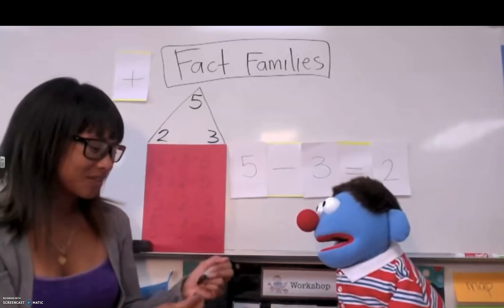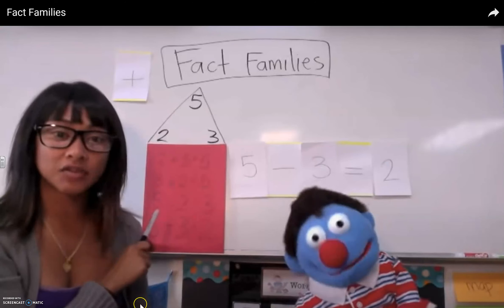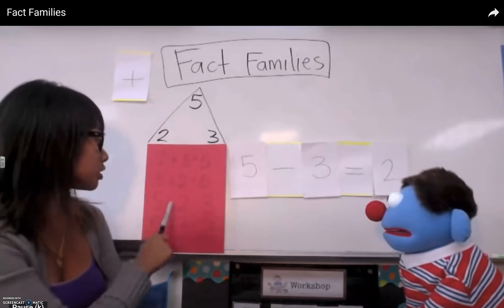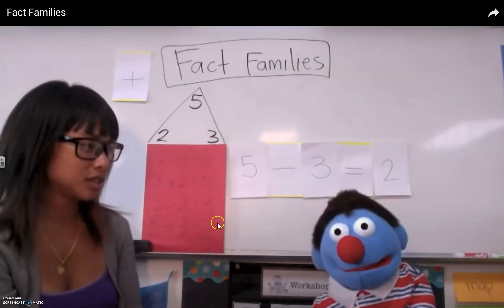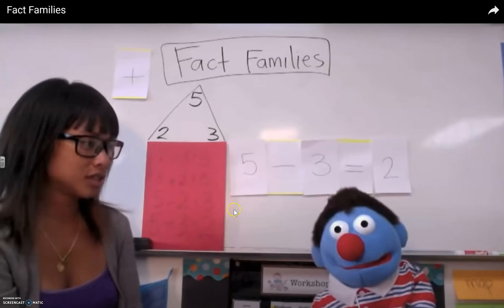Good. So then I can write five minus three equals two. I like your handwriting. Oh, thank you. And so that is our fact family. I have two addition, two subtraction, and they all make sense. Do you see? All right, guys. That was great.